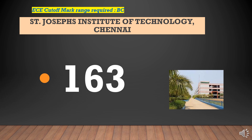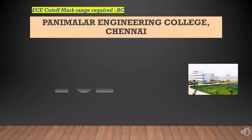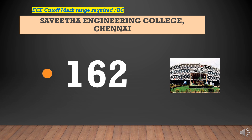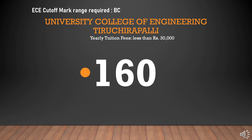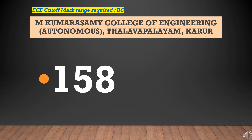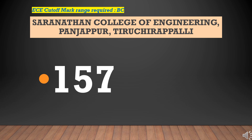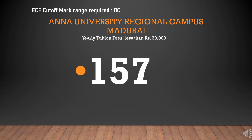St. Joseph's Institute of Technology: Cut-Off Required for ECE BC is 163. Panamala Engineering College: Cut-Off Required for ECE BC is 162. Savitha Engineering College: Cut-Off Required for ECE BC is 162. University College of Engineering: Cut-Off Required for ECE BC is 163 (Yearly Tuition Fees Less Than Rupees 30,000). M. Kumarasamy College of Engineering: Cut-Off Required for ECE BC is 158. Knowledge Institute of Technology: Cut-Off Required for ECE BC is 157. Saranathan College of Engineering: Cut-Off Required for ECE BC is 157.